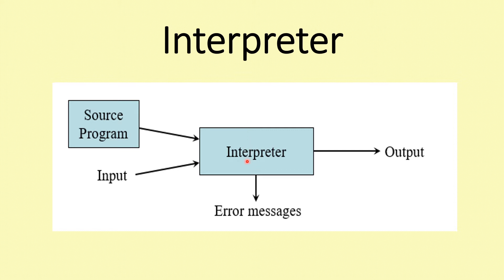The interpreter executes line by line — that means statement by statement. They can execute one statement, then move to the next line and execute the next line, and so on, producing the output. In this case, we don't have an intermediate file; they can't execute an intermediate file.